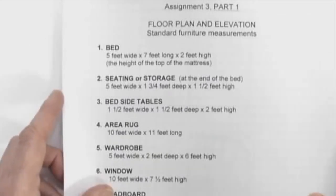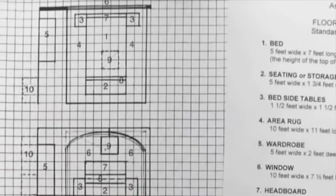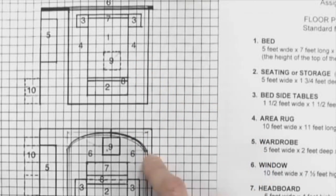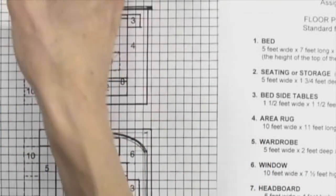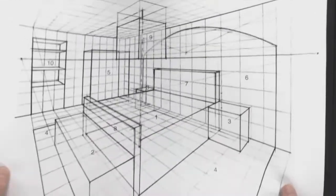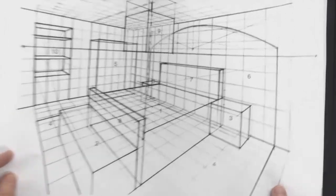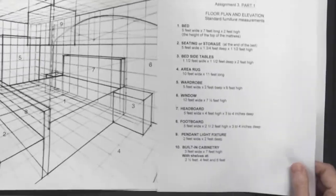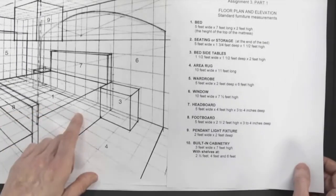This time it's a portion of a master bedroom. You've also been given a floor plan and two elevations. And if we were to look at the drawing itself, when we get all the box forms in, you'll see that the numbers on here represent the items on the floor plan.